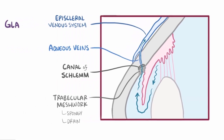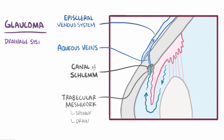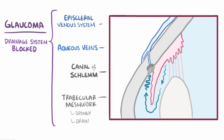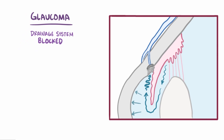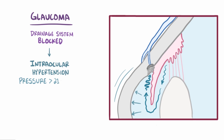In glaucoma, part of this aqueous humor drainage pathway becomes partially or completely blocked, so that fluid can't easily drain out. This causes the pressure within the fixed space of the anterior chamber to quickly build up, causing intraocular hypertension, which is defined as pressure greater than 21 mmHg, or 2.8 kPa.